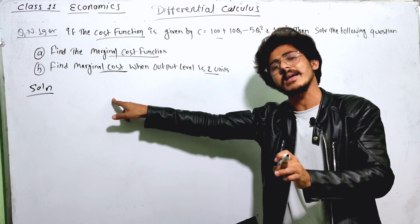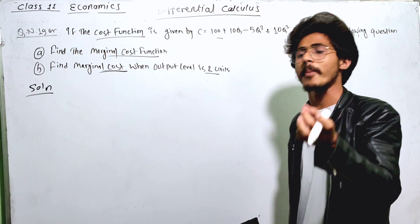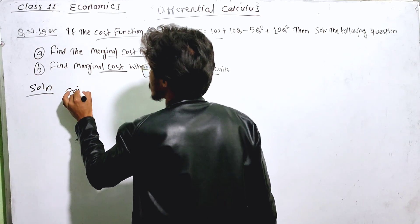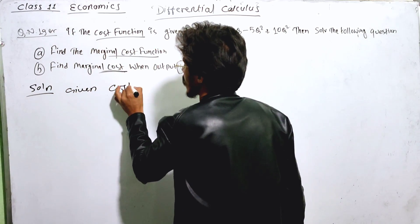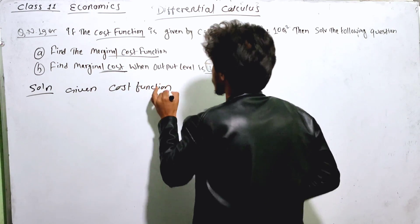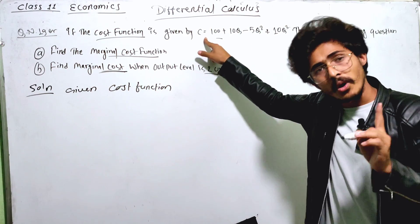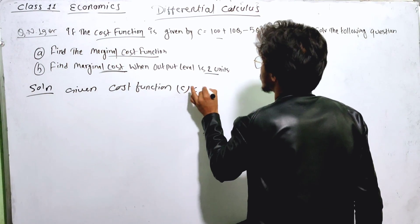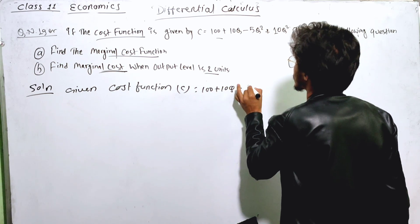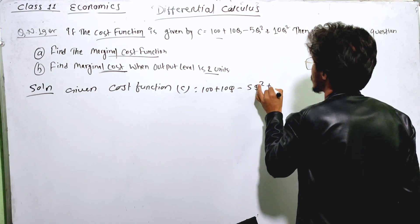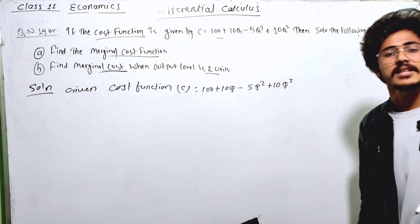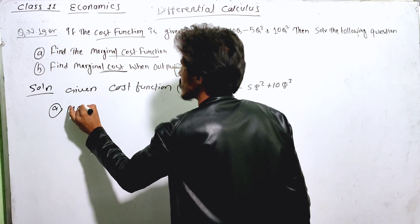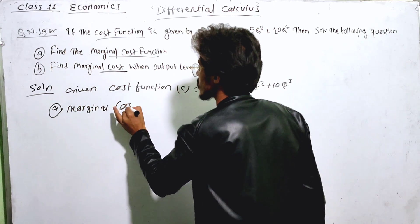This is the derivative. The derivative is the core of this solution. The cost function means the total cost. The production function relates to total production. The cost function is C equal to 100 plus 10Q minus 5Q squared plus 10Q cubed. This gives us the marginal cost function value.